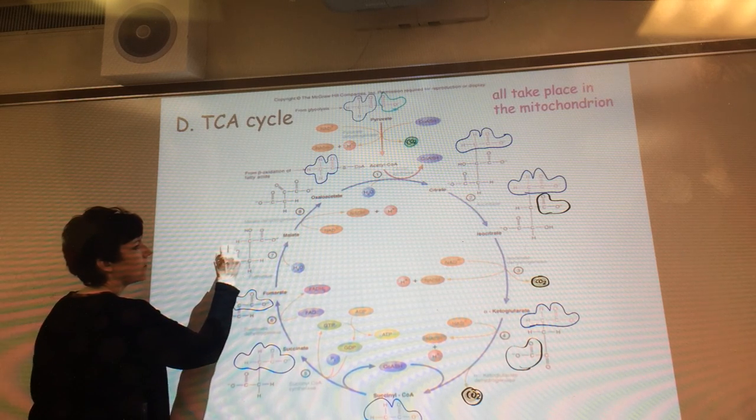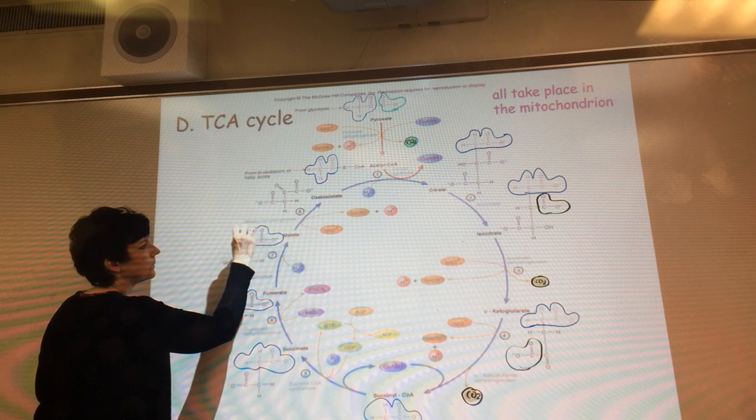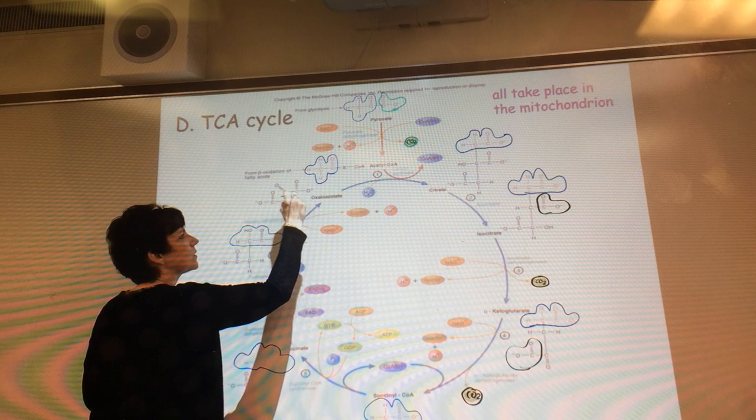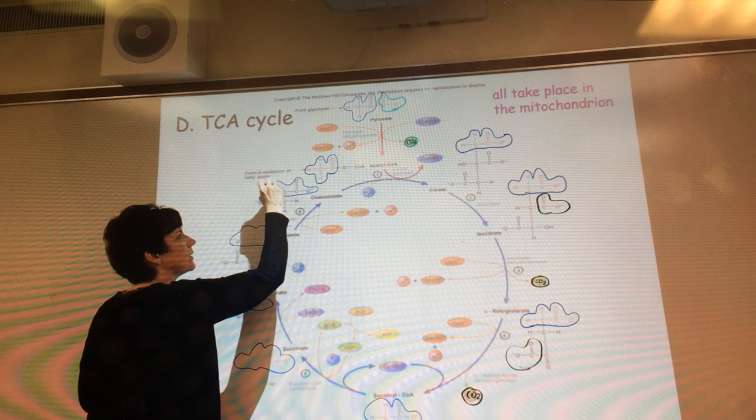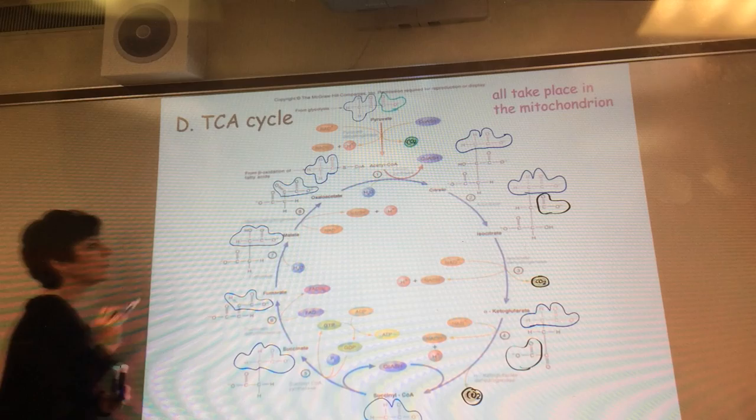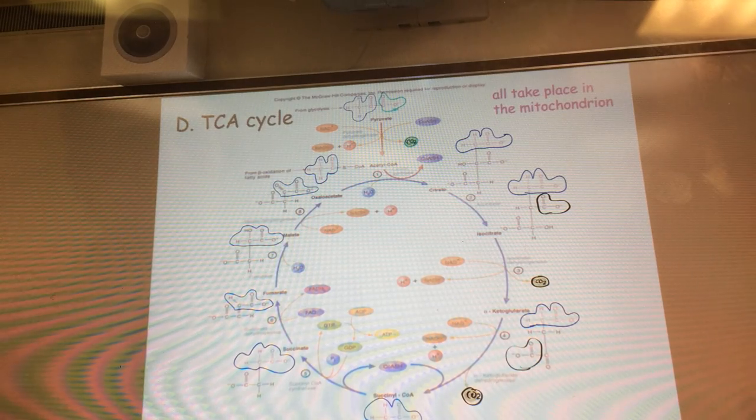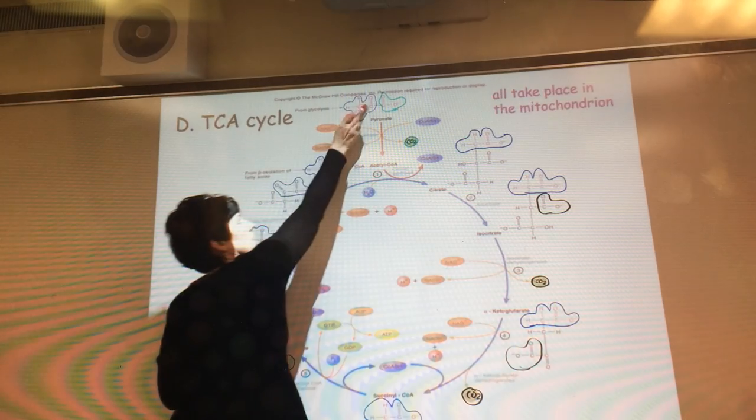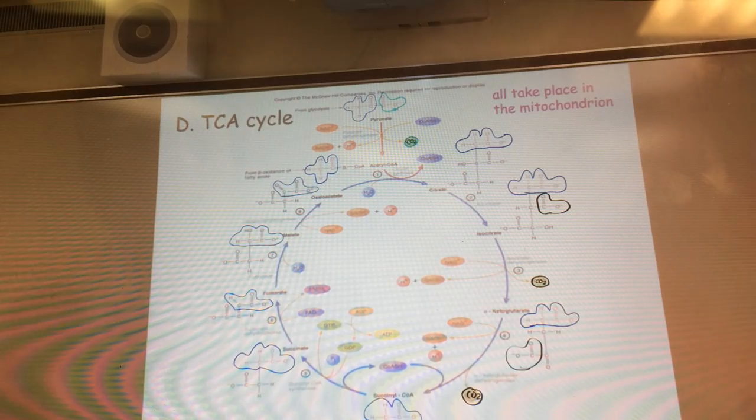And then we'll follow our fumarate to malate. So now it's a carboxylate and a ketone that was originally that acetate unit up above.